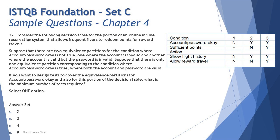Suppose there are two equivalence partitions for the conditions where account or password is not okay — one where the account is invalid, and another where the account is valid but the password is invalid. In the table provided, we have one condition: account or password okay. The first line says if account or password is not okay, then no action can be taken. That means either you don't have an existing account, or you have one but the password is incorrect — so the login scenario is broken into two parts.